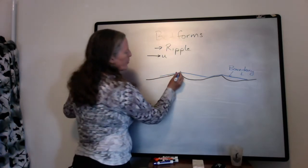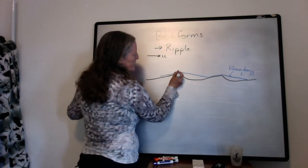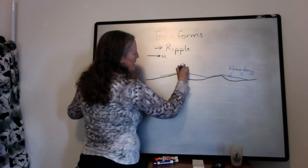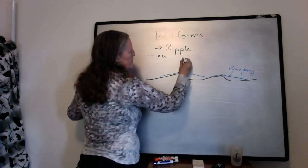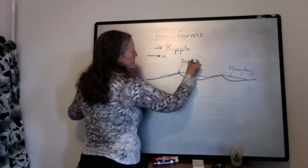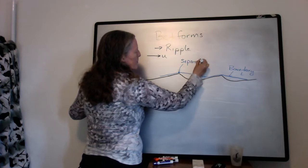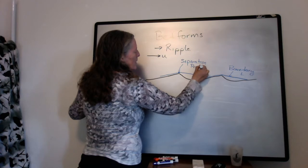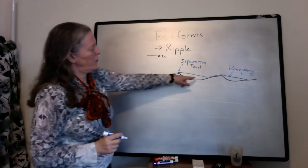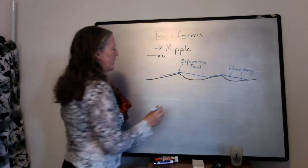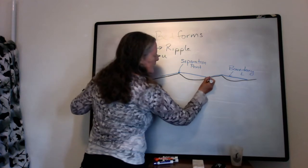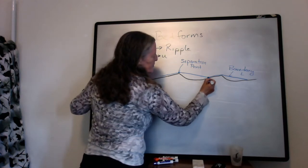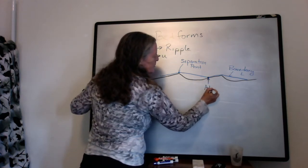We label the points where it separates from the bed, which is right at the crest of the ripple, as a separation point. And where the flow comes in and interacts with the bed again, it attaches to the surface again, and we call this the attachment point.